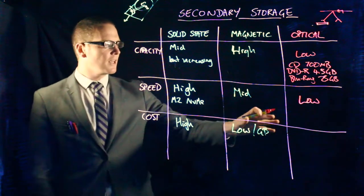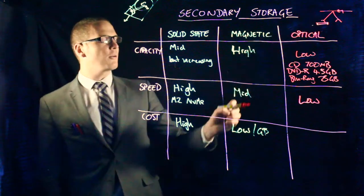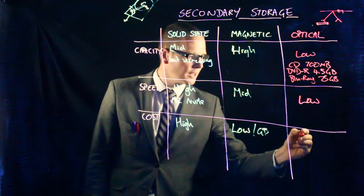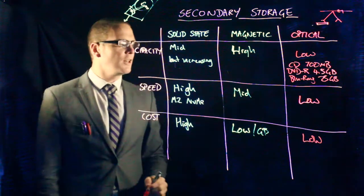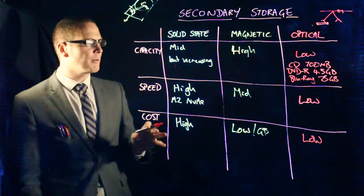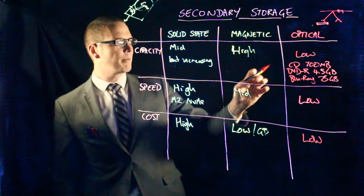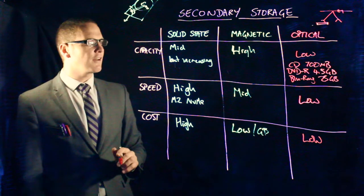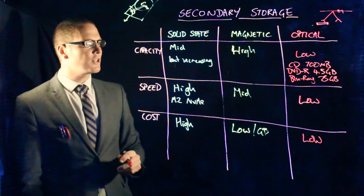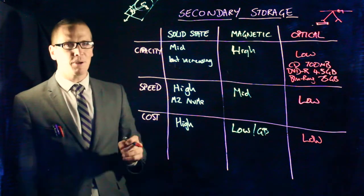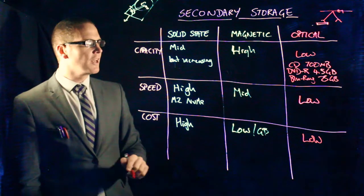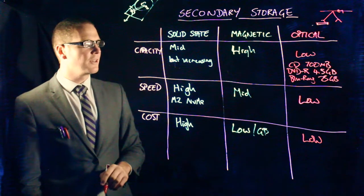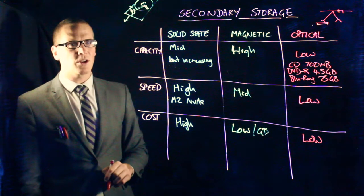So, speed, low because of spinning, optically read moving parts. And also cost, we're talking low per disc, but that's not necessarily low per gigabyte. So a CD is going to have 700 megabytes of information. It only costs pennies each. To be honest, if you're sending a file to someone, it's probably your cheapest way of sending someone a file in the post.